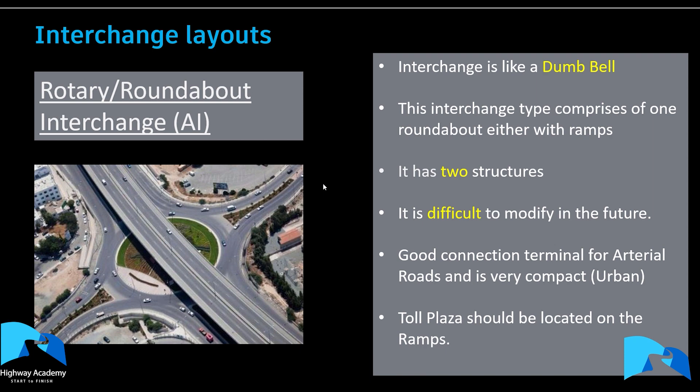The next is the rotary or roundabout interchange, which is quite popular. It's similar to a dumbbell but comprises just one roundabout with ramps on either side. The difference is it requires two bridge structures. It's very hard to modify in the future, but it's very compact and good for connecting arterial roads. In urban areas this is a strong interchange of choice, and toll plazas should be located on the ramps.